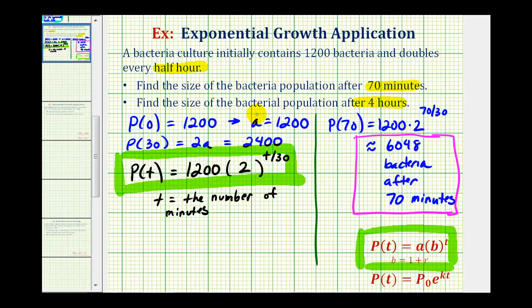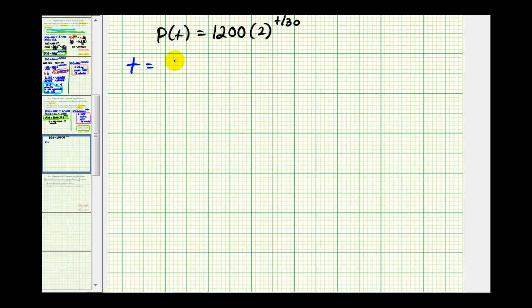Now let's determine the population after four hours. Well, for t equals four hours, we need to convert this into minutes. So this would be four times 60 minutes, or 240 minutes.